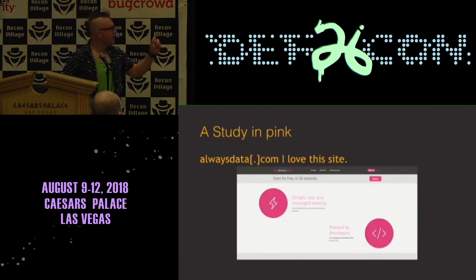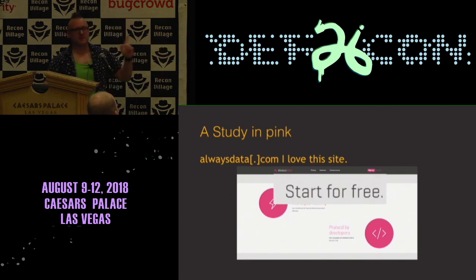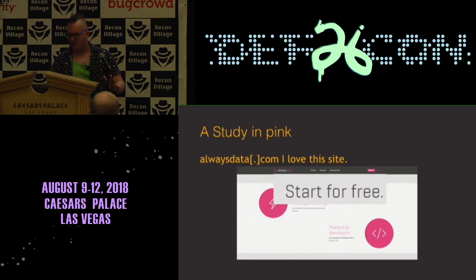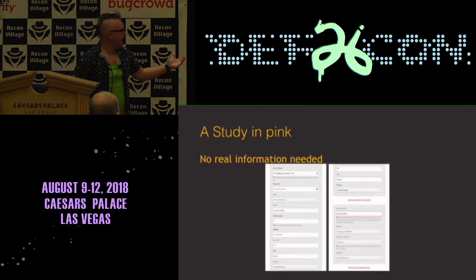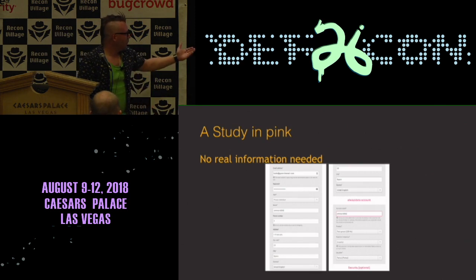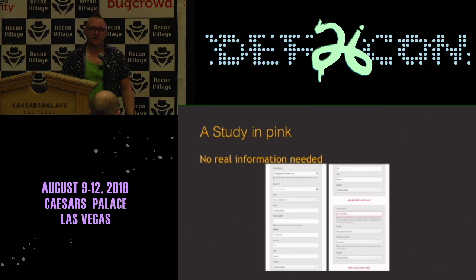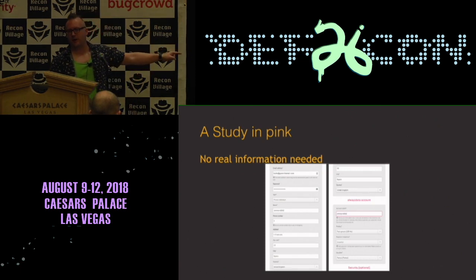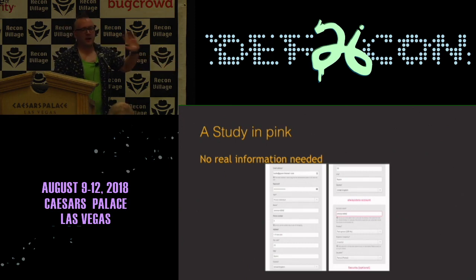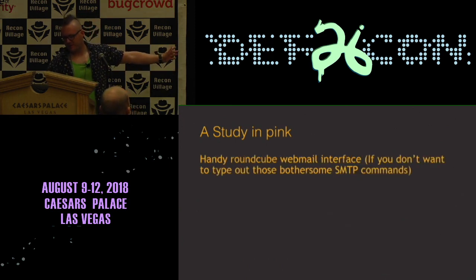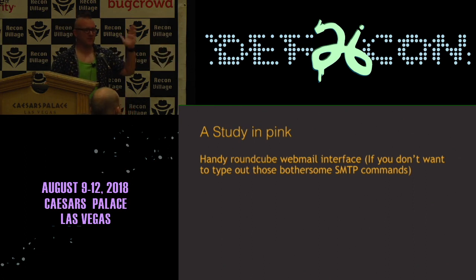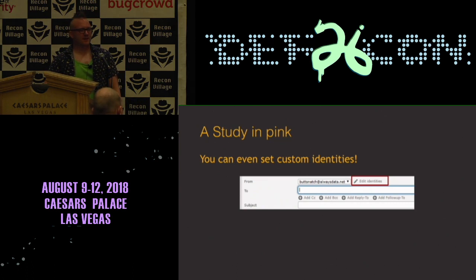A Study in Pink. I love this site — AlwaysData.com. The best thing about this site is that you can start for free. There's no sign-up fee, no 30-day trial. They will give you a really basic account for absolutely nothing. You also don't have to fill in any correct information — that's Butts at Guerrilla Mail, my name is Jimmy Riddle, I live at 1 France 77 in the city of Spain. The only thing that has to be correct is the country, which it checks against your IP. It takes no credit card details, nothing else — you can lie through your back teeth. And it has a handy RoundCube webmail interface so you don't have to type out those SMTP commands on the shell.